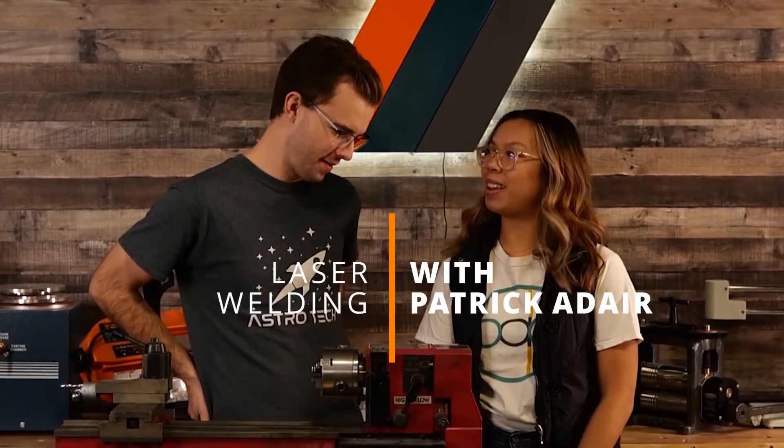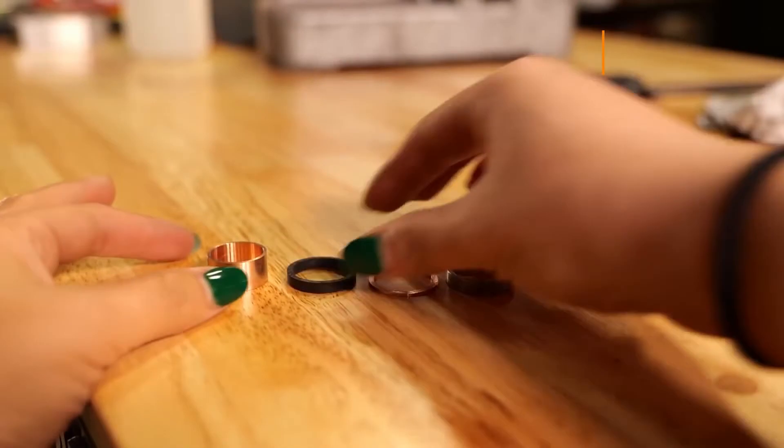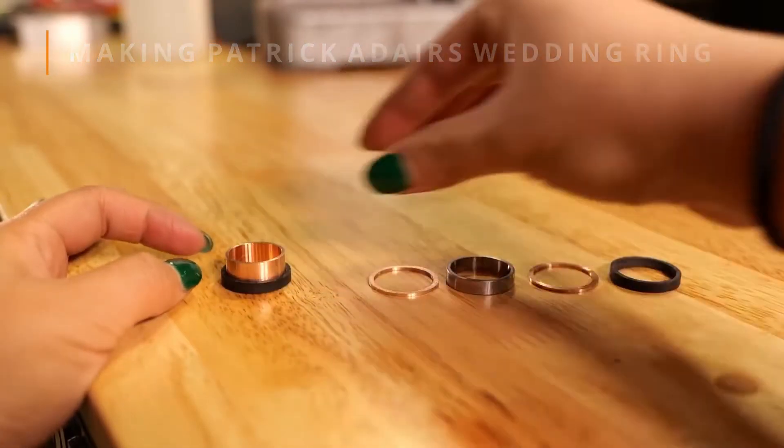So what are we going to be doing today? We're going to be making your wedding ring. Perfect. Now we've got all the pieces ready to go. Let's stack them all together and get an idea of how this is coming together.